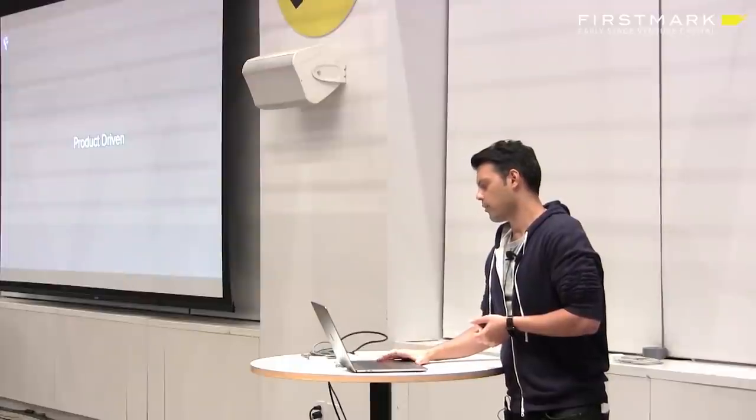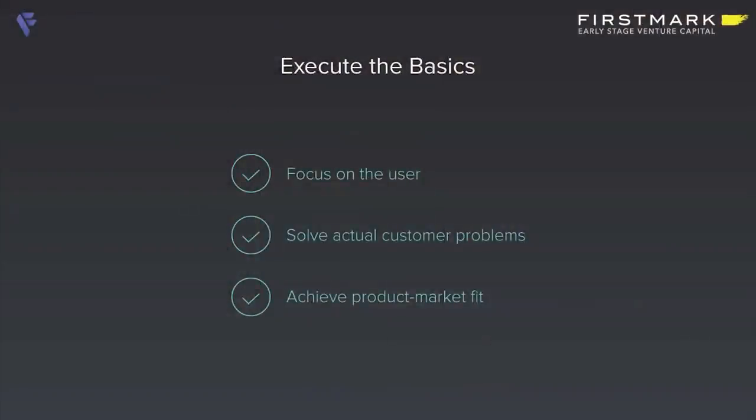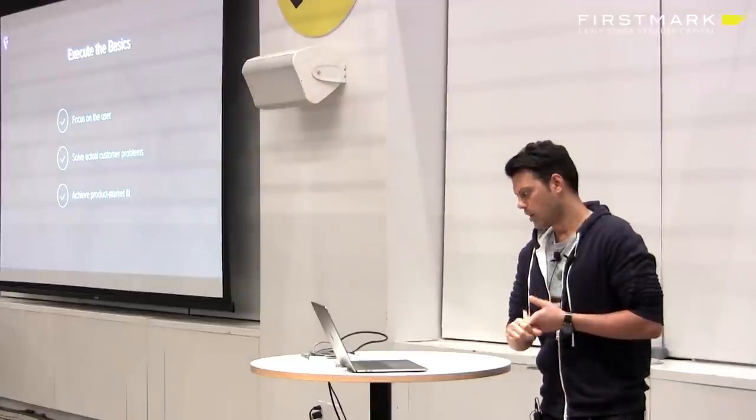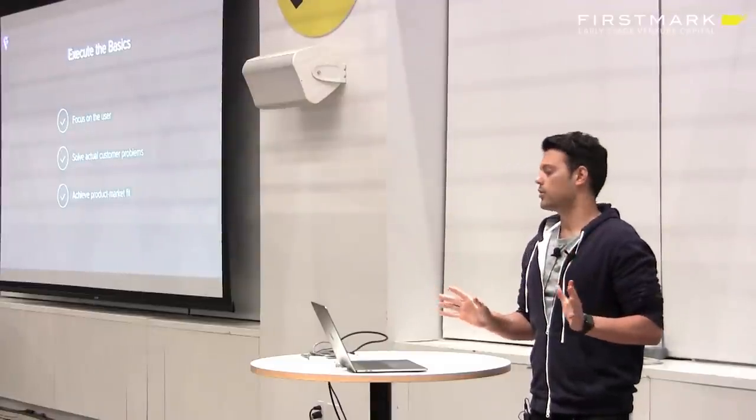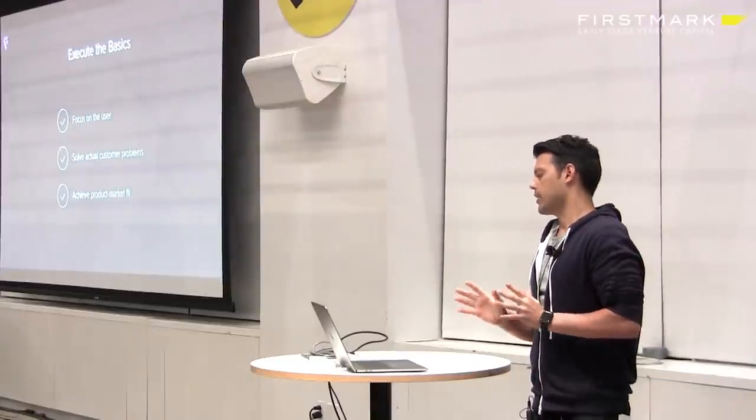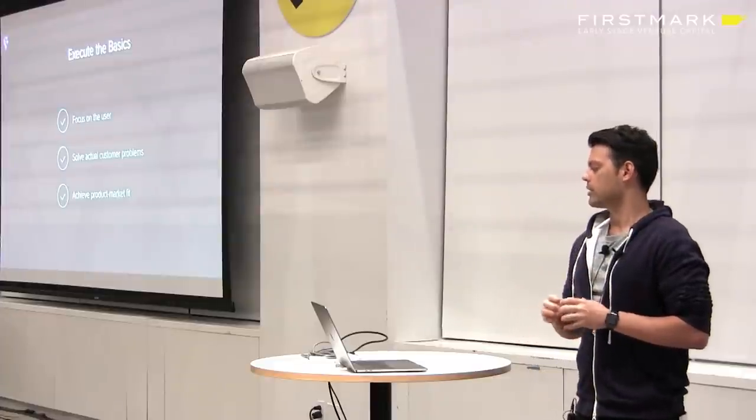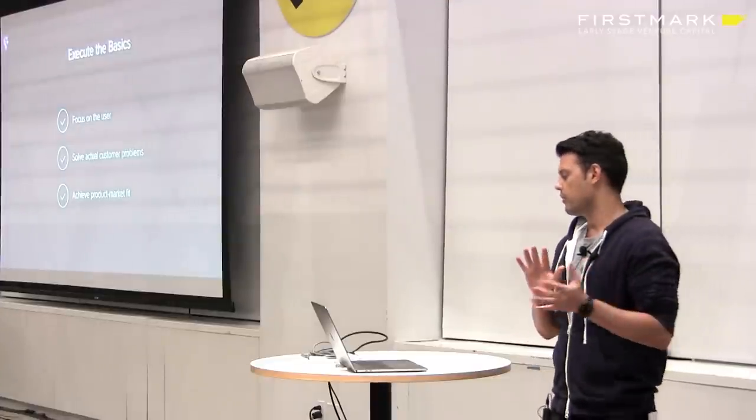So what's our formula for being extraordinary? Well, let's be clear that first, you need to execute the fundamentals well to build a winning product. So there's no shortcuts. You got to have a focus on the user. You have to solve actual customer problems. And you need to achieve product-market fit. But let's just assume that we've done all that. So I want to talk about the three things that I believe drives our product success and sets us apart from the rest.